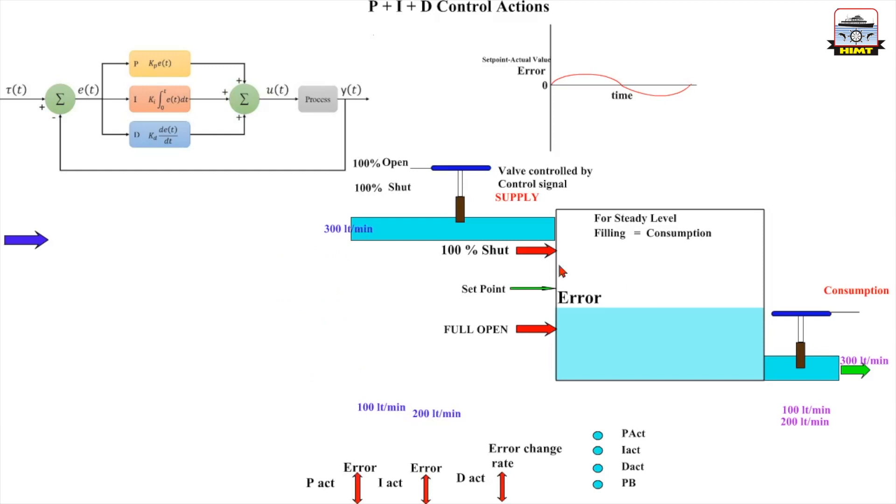Now since the supply is equal to consumption, we call this the steady state condition. Now the level will remain steady here and it will not go down any further. But what we have here left is the error or offset or deviation.